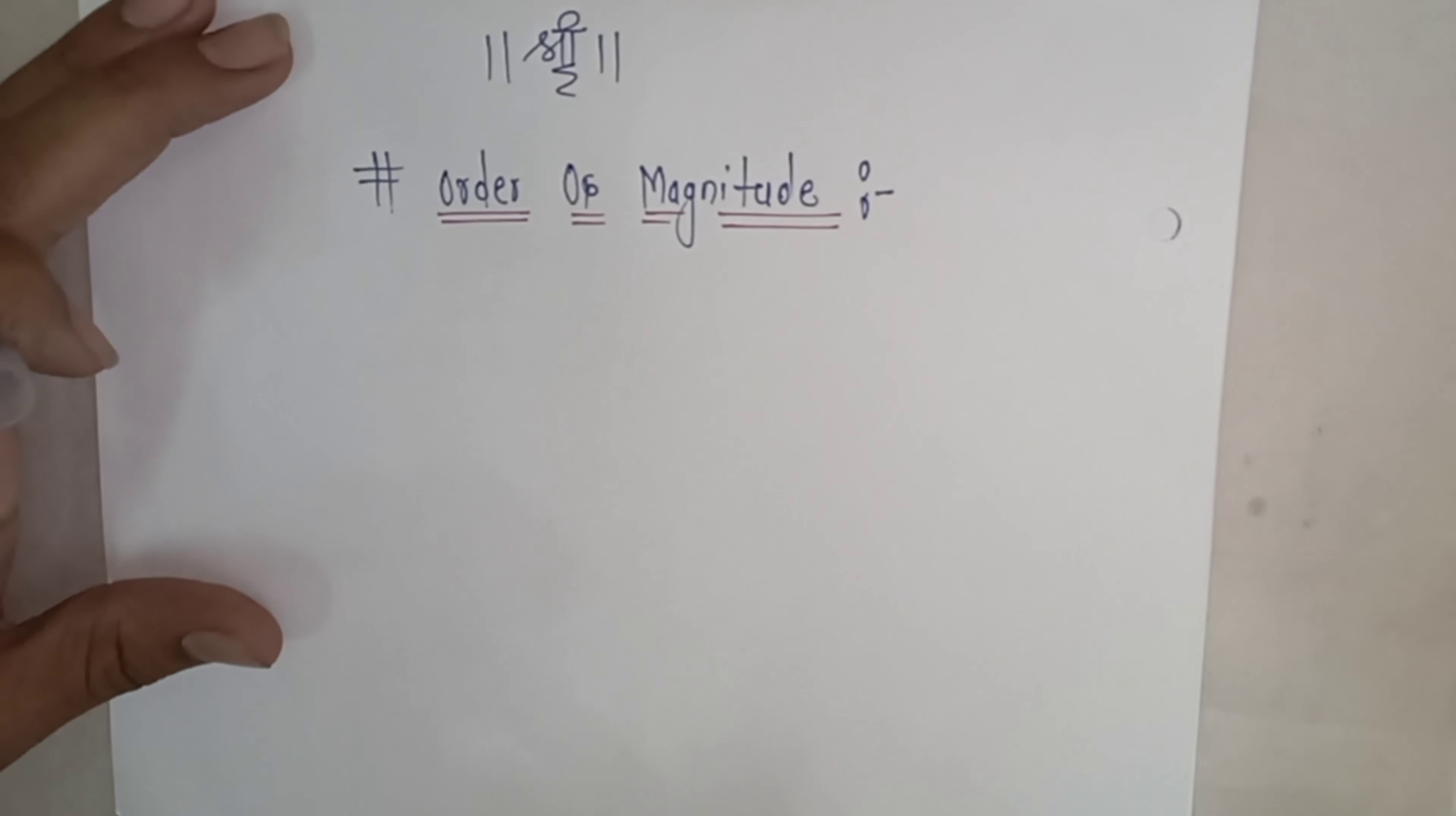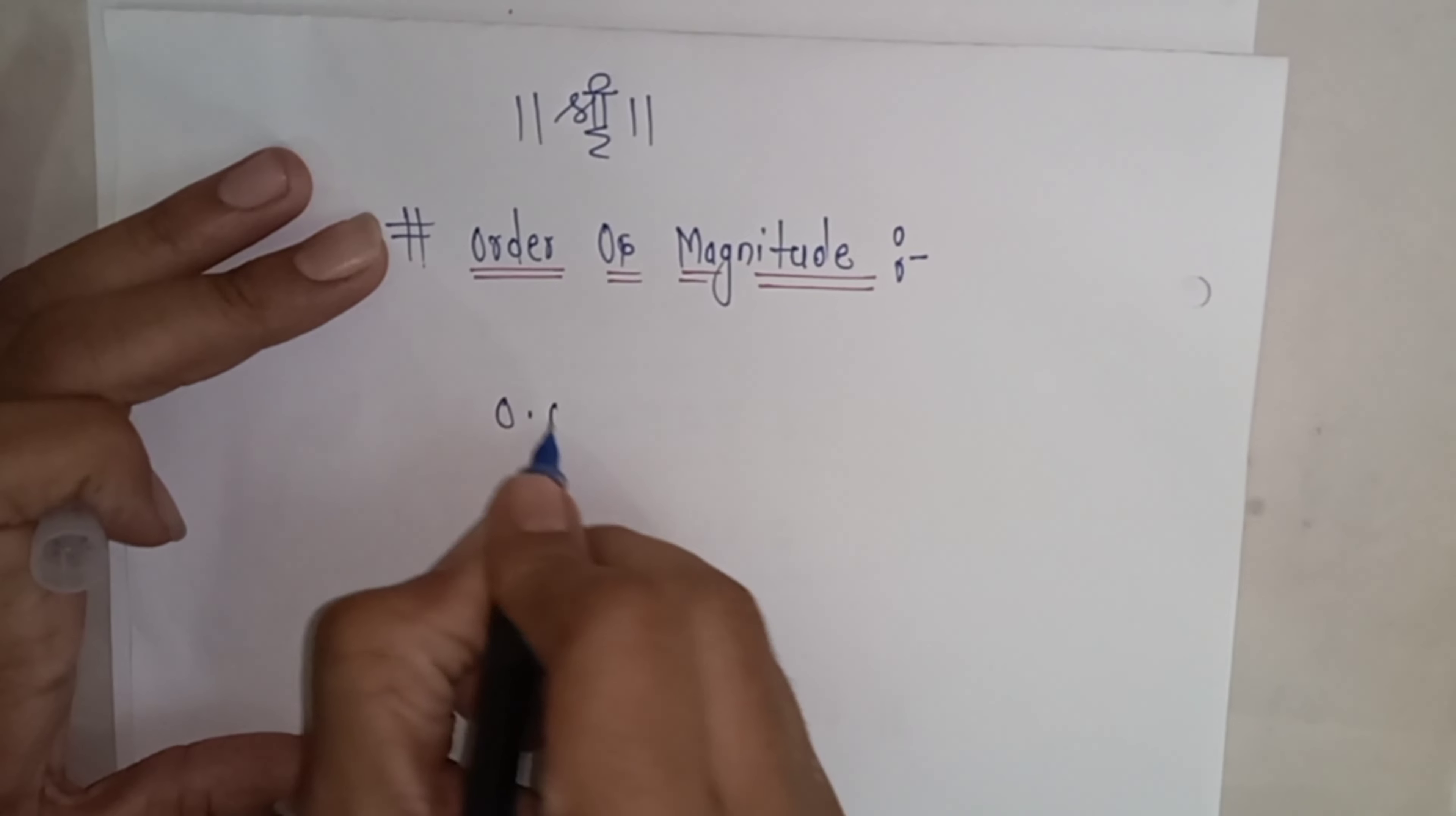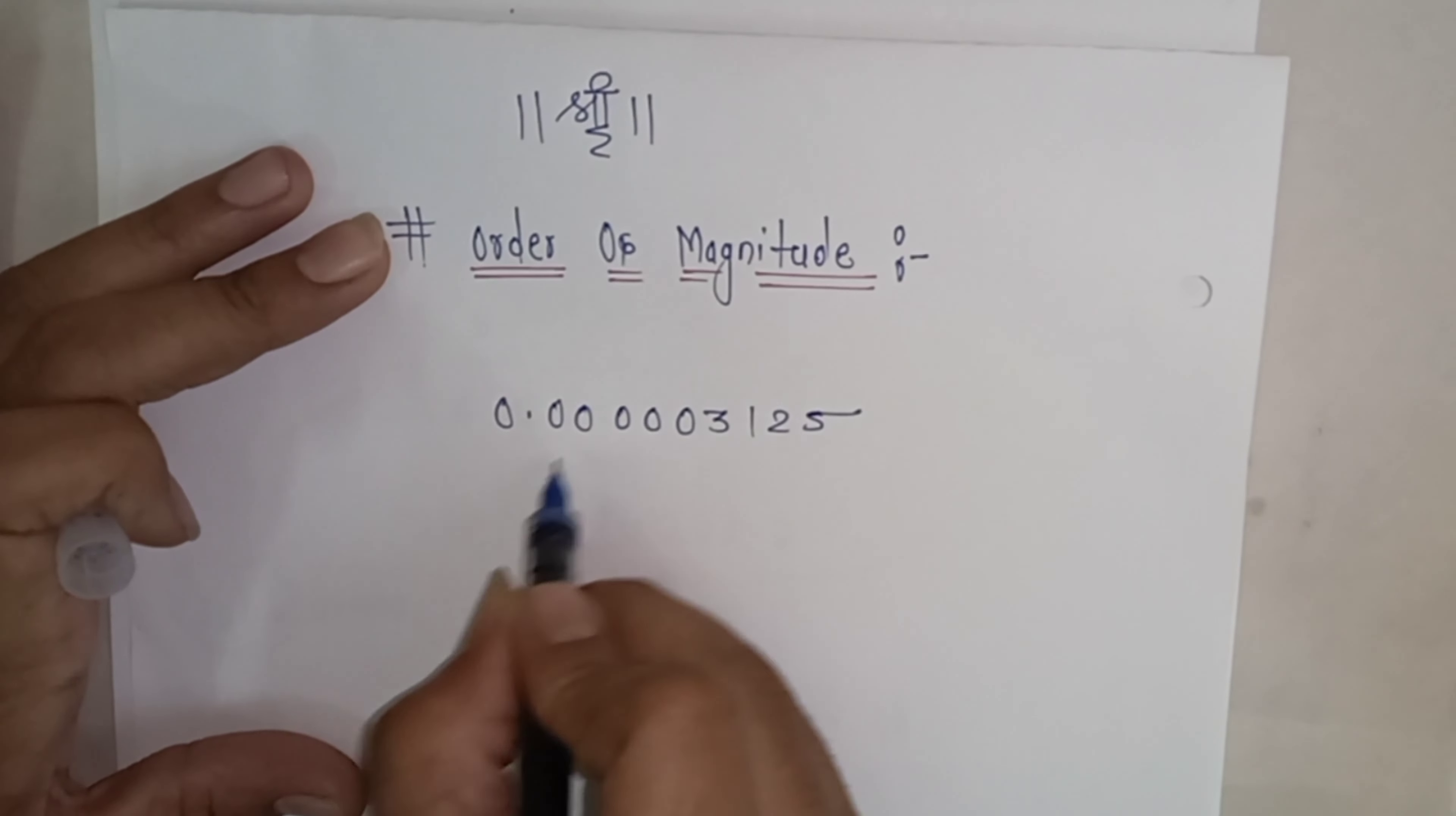In general physics and chemistry, we measure very small and very large quantities. Let's take an example: suppose we have a number 0.00000312.